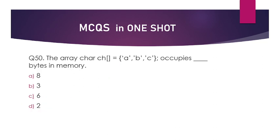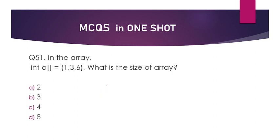The array char abc occupies how many bytes in memory? One character stores 2 bytes, so 3 characters store 6 bytes. Answer is option number C — that is 6. Next: in the array int a = {1, 2, 3}, what is the size of array A? Size means length. There are 3 elements so the length is 3. The answer is option number B — that is 3.